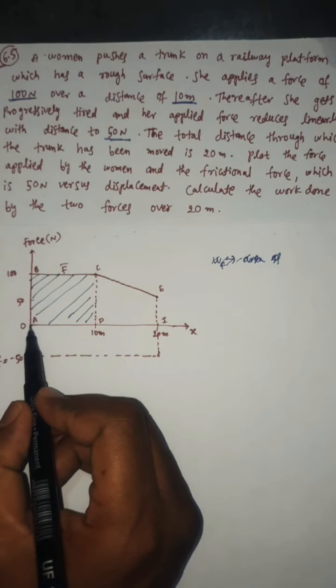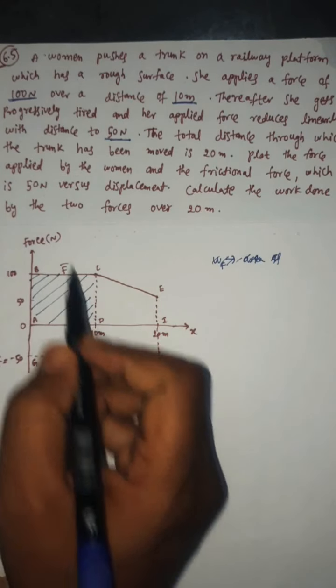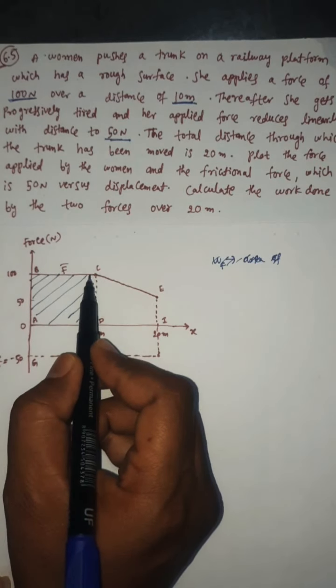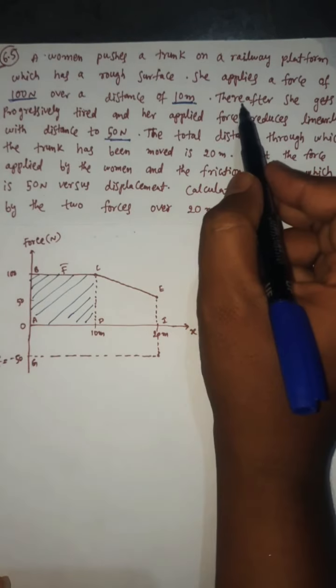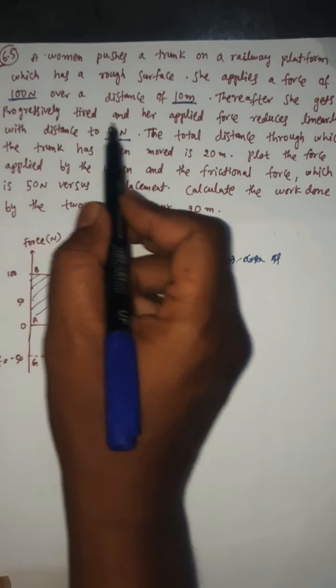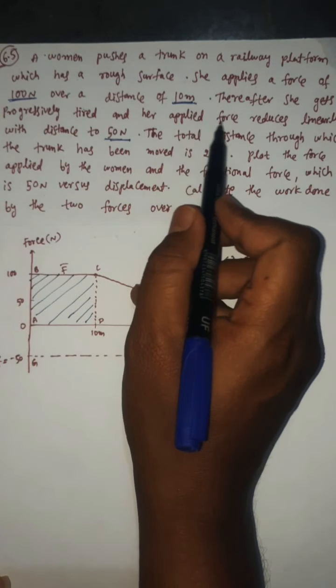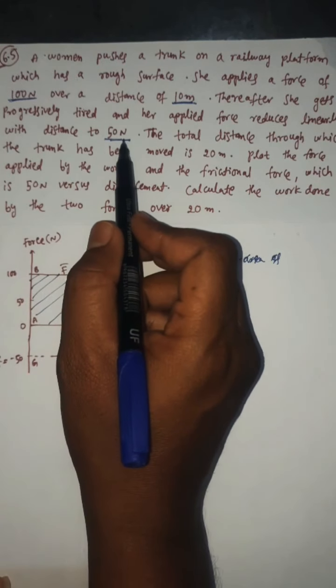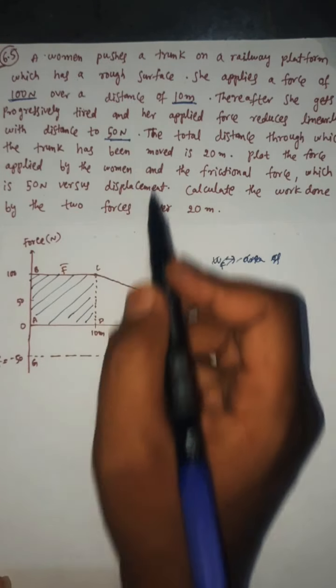Up to 10 meters — from 0 to 10 meters — she applied a constant force of 100 Newtons. After 10 meters, she gets progressively tired and her applied force reduces linearly with distance to 50 Newtons.